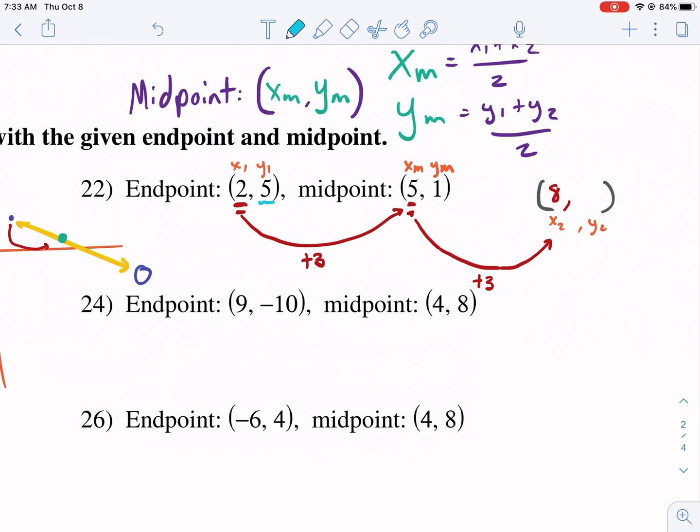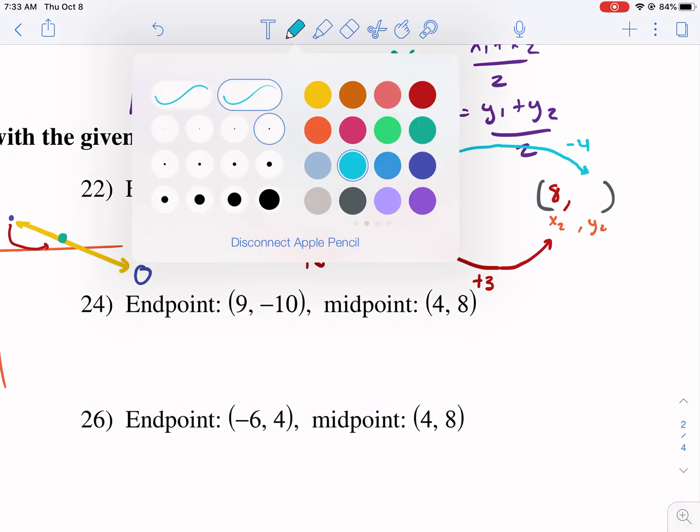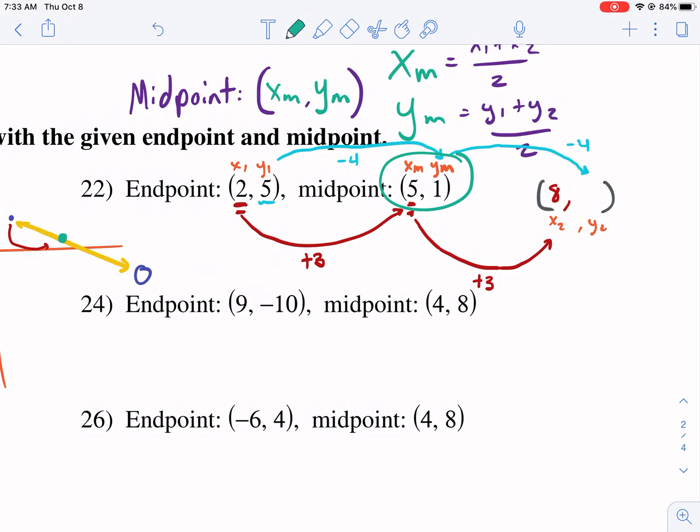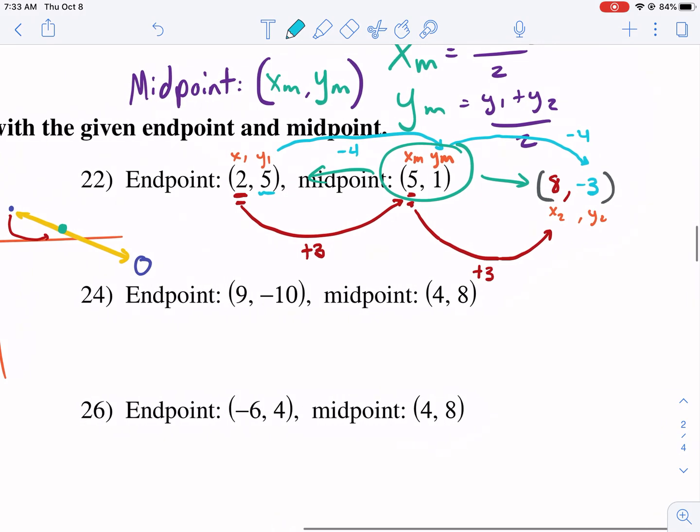The second step, this is so easy, so much easier than the other way. The second step is we need to find the Y. So how does the Y change? I kinda wanna go up. Let me go up instead. How does the Y change? We go from five to one. What happened? We subtracted four. So if it's the same on both sides, then we also need to subtract again by four to find the endpoint. Because remember, this midpoint is halfway in between these two points. So we subtract four again, and we get negative three. So therefore, our endpoint is eight, comma, negative three.